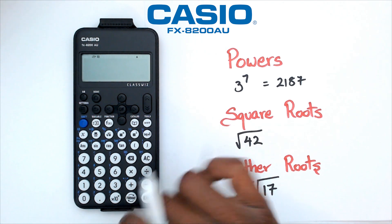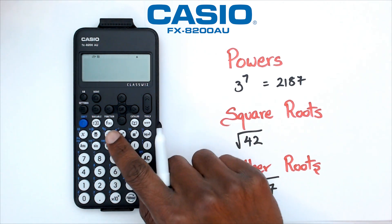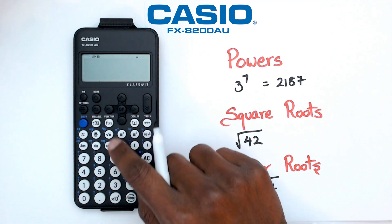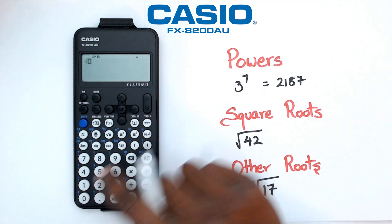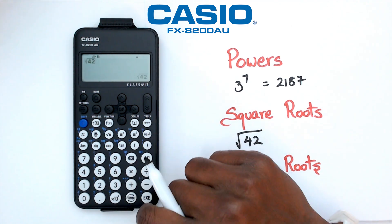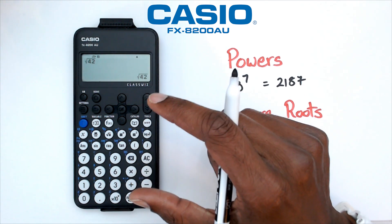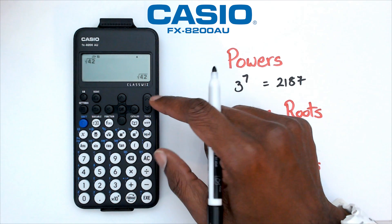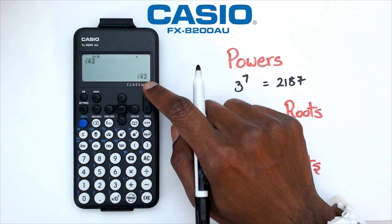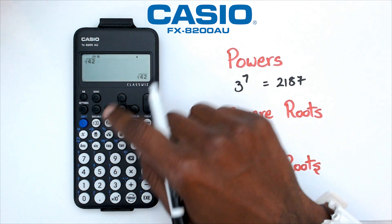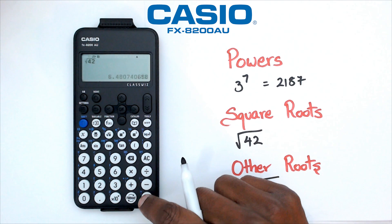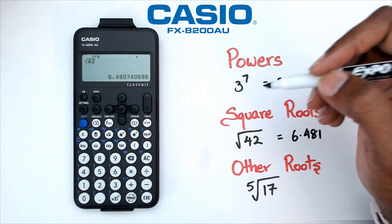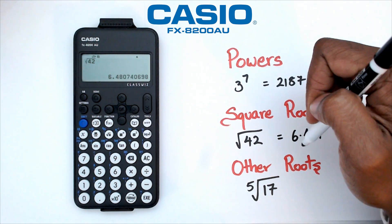Now, to find out what the square root of 42 is, we are going to use the square root button. We're just going to click on the square root button and then click on 42. Now, if you remember, this calculator is currently set up as maths output, but we actually want this to be a decimal. So we're going to click on shift equals, and that's going to give us the answer as a decimal. For this particular example, I'm going to use three decimal places.